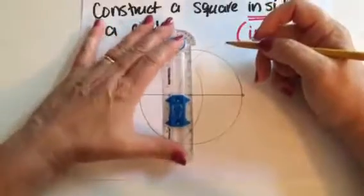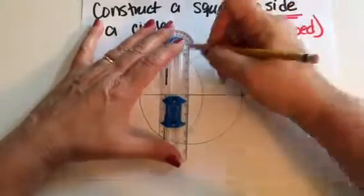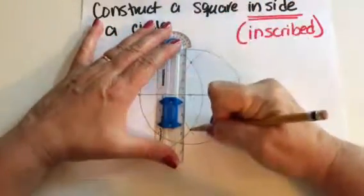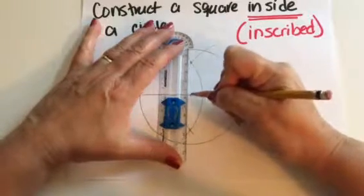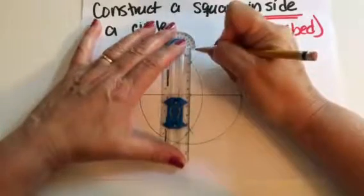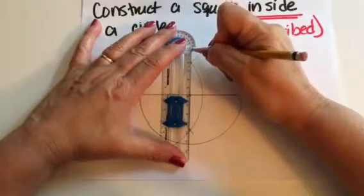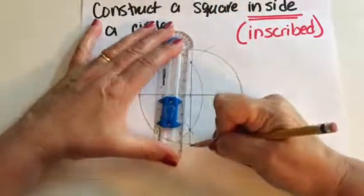So we're going to take our ruler, our straight edge, and we're going to line up these points. One, two, and the center makes three. So I'm going to line them up, and I'm going to find out where they intersect my circle.